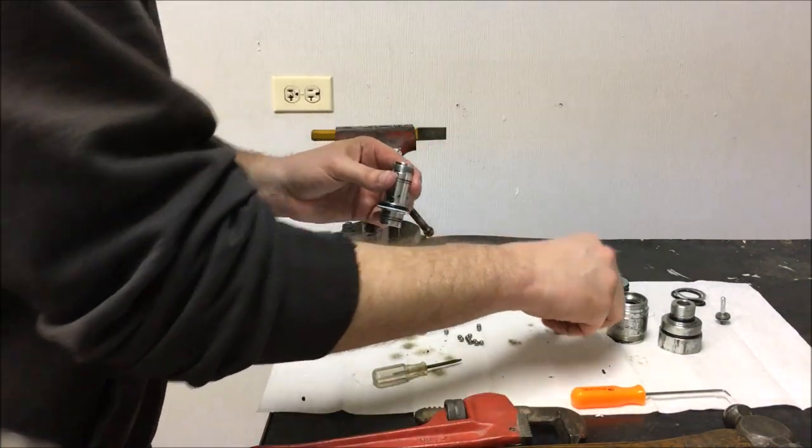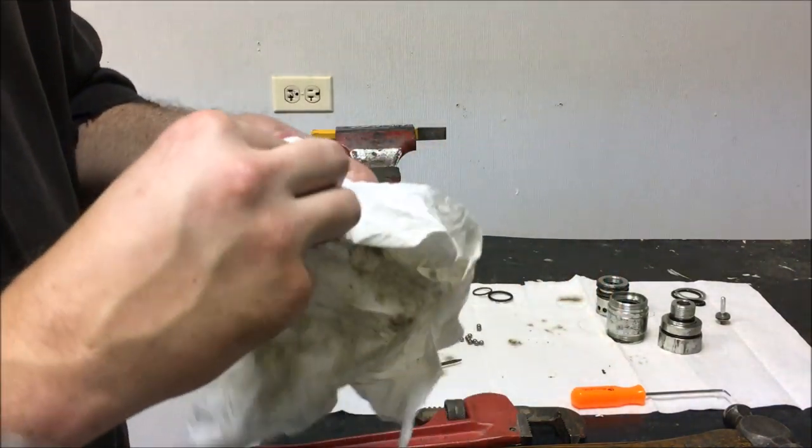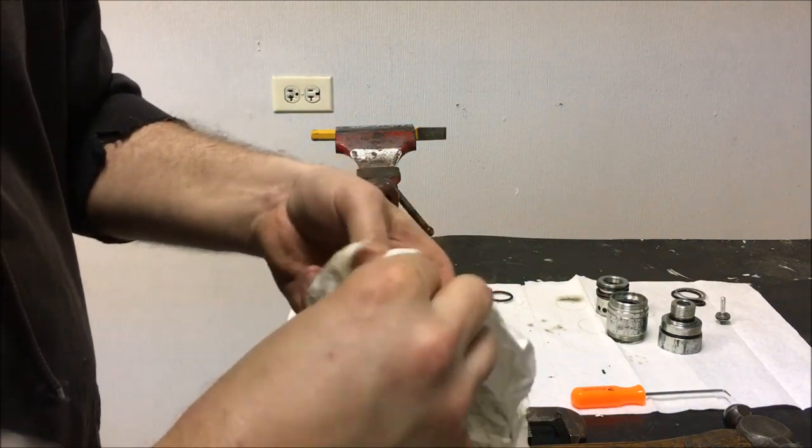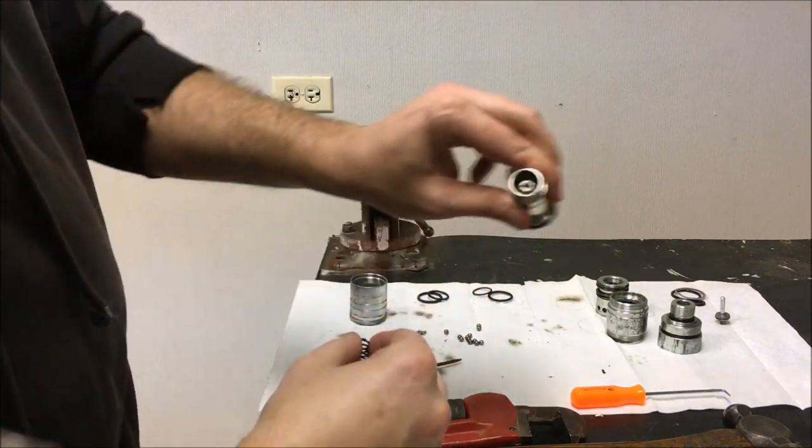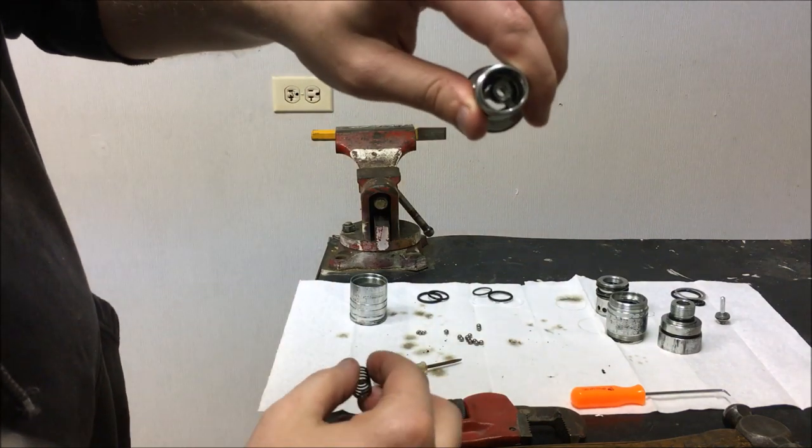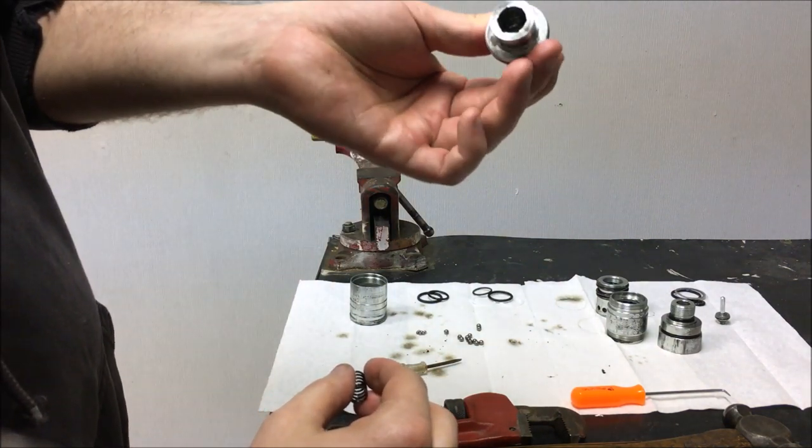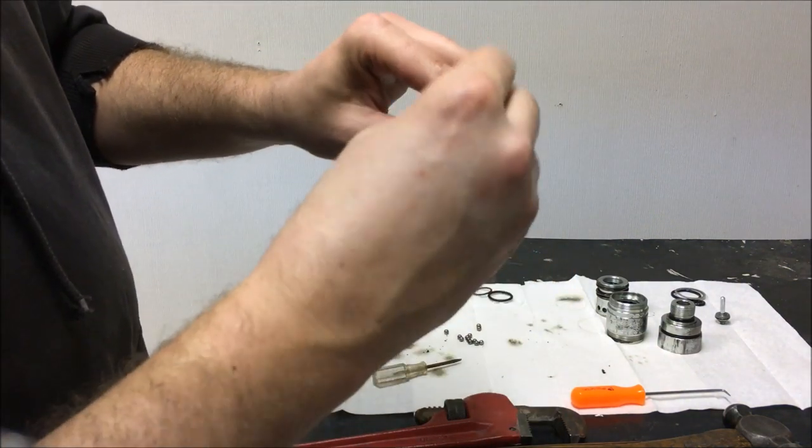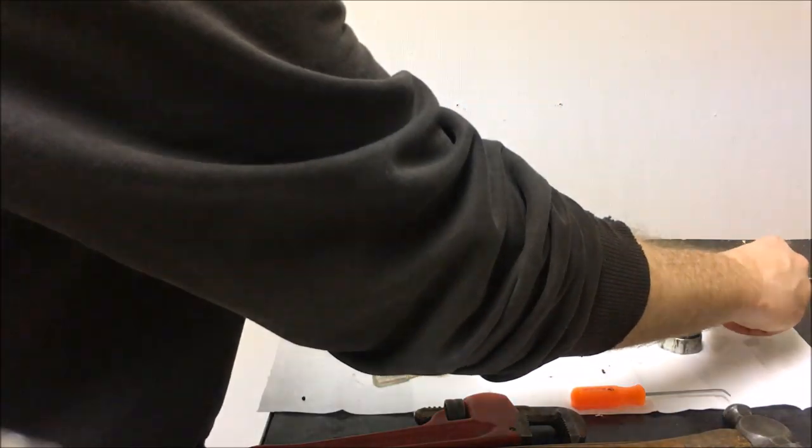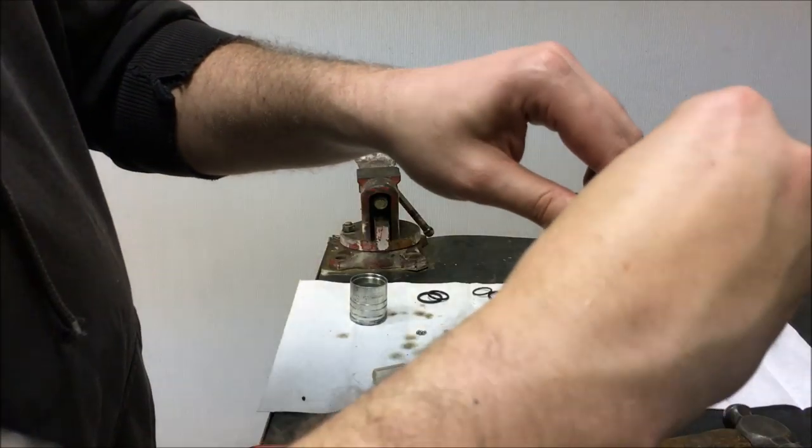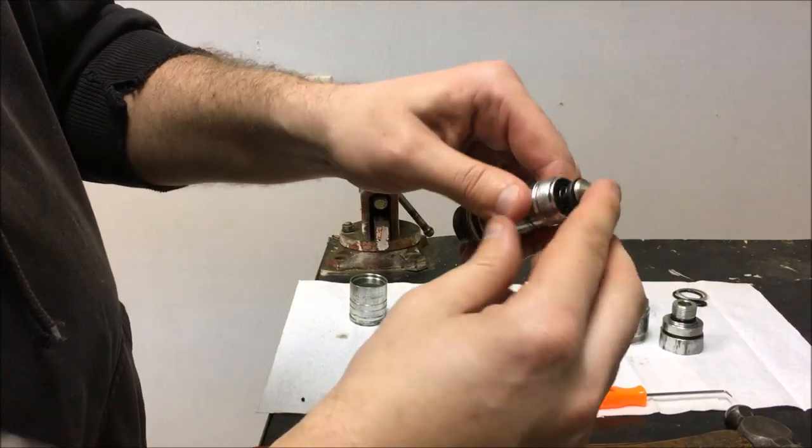So after that, we can kind of start reassembling things as we go. That's what it looks like inside of there. There's a spring in there. You can go ahead and put this spring over, and then we put our plunger in here like that.